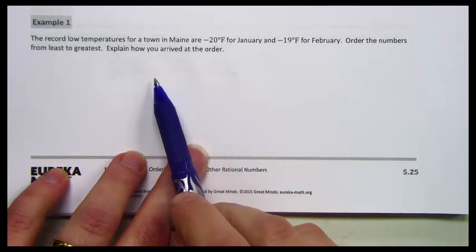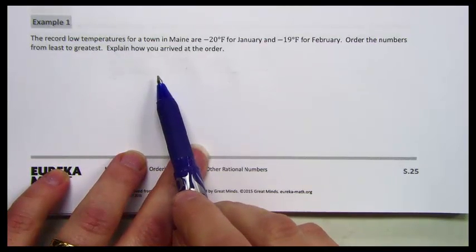Remember when we talked about number lines, we talked about one of the characteristics as being that the larger numbers are to the right.